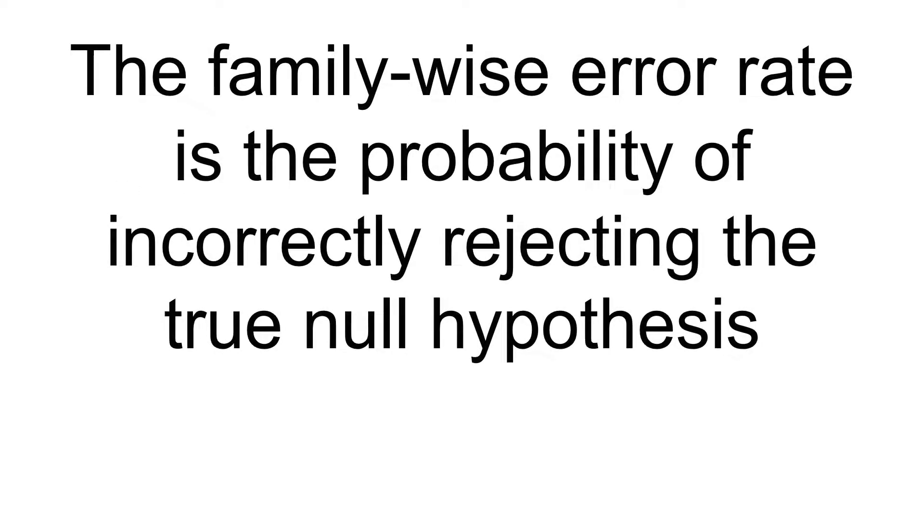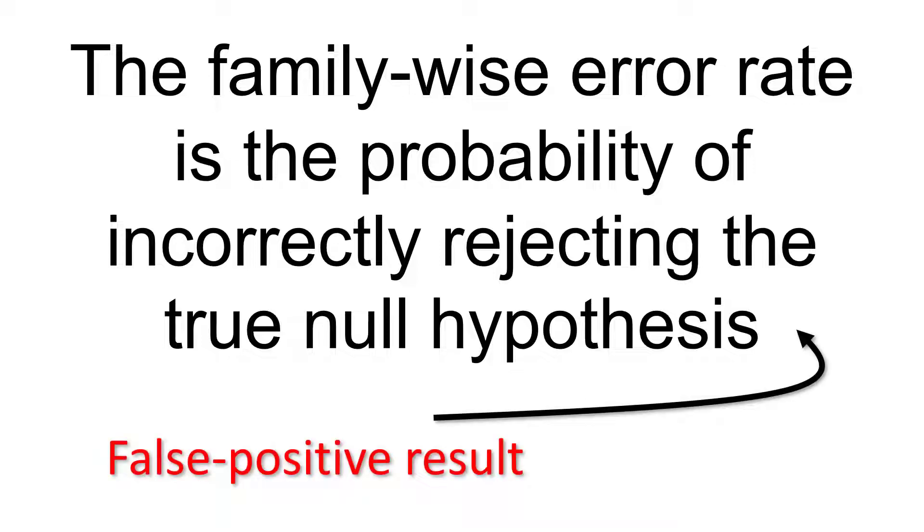The family-wise error rate is the probability of incorrectly rejecting the true null hypothesis. In other words it's the chance of finding a false positive result. You also read that this is referred to as type 1 error and I'll go into a bit more detail about this later.